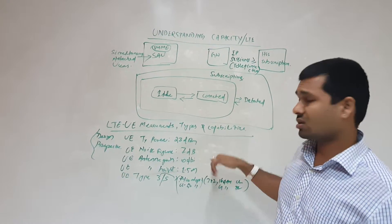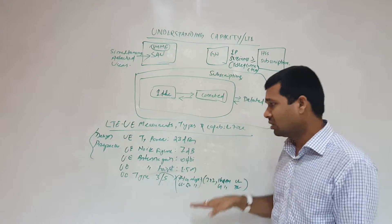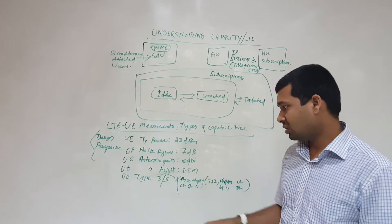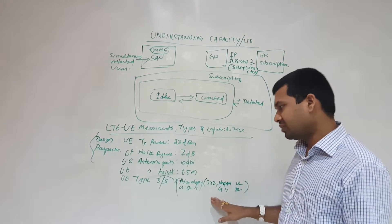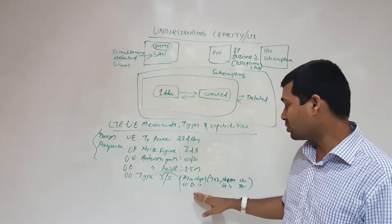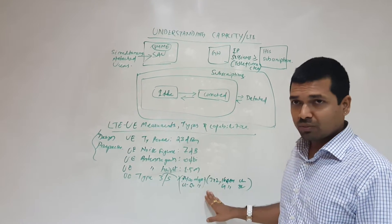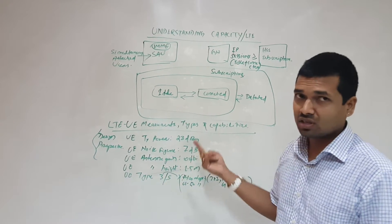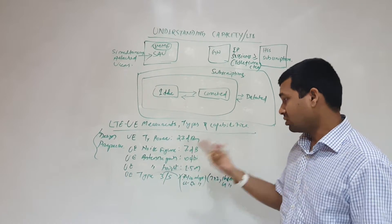For UE type, if we choose Type 3, we have this specification allowed: downlink throughput is 100 Mbps, uplink throughput is 50 Mbps, 2x2 MIMO is allowed - 2 antennas in mobile and 2 antennas in the base station or eNodeB. 64 QAM is supported in uplink and downlink.